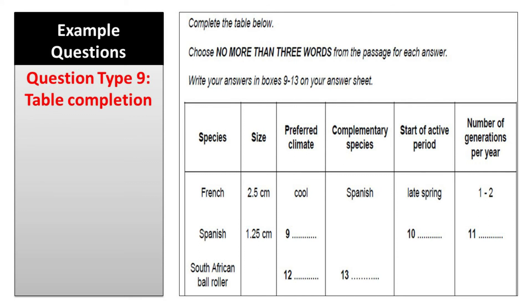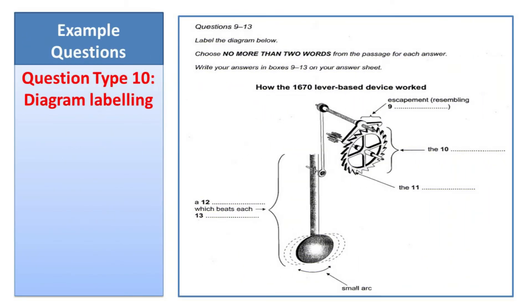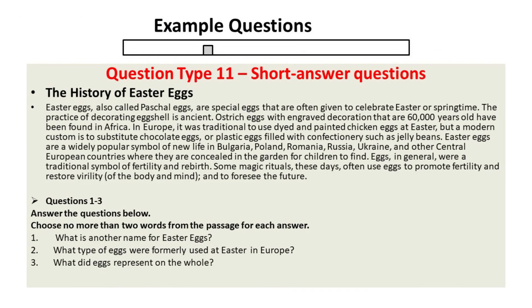Question type ten is Diagram Labeling. You will be given a diagram in the question, and some labels or statements in that diagram are missing. You need to read the text, find the part discussing that process or diagram, and then complete the missing parts in the diagram with the help of textual information. It is again a kind of fill-in-the-blanks question.